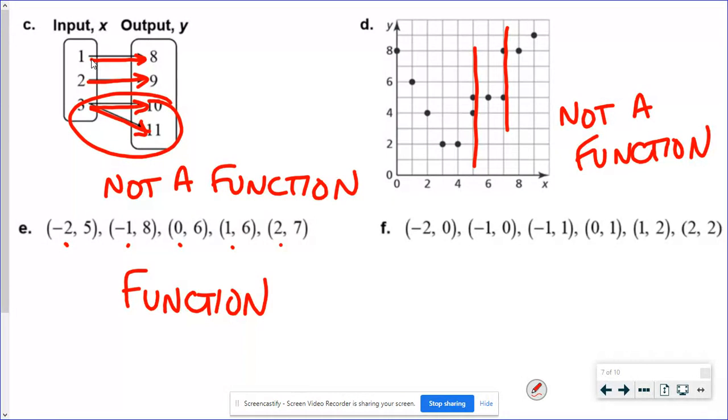In letter f, I've got a negative 2, negative 1, negative 1. Same input twice, not a function.